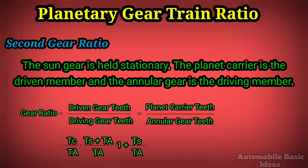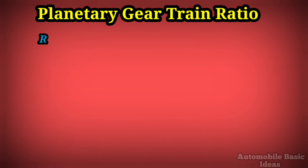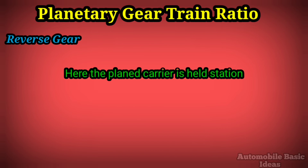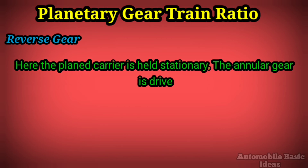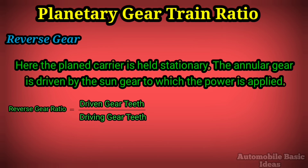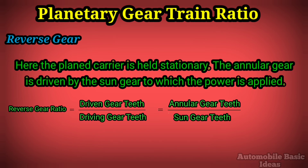Reverse gear: here the planet carrier is held stationary and the annular gear is driven by the sun gear, to which the power is applied. Reverse gear ratio = driven gear teeth ÷ driving gear teeth = annular gear teeth ÷ sun gear teeth = Ta ÷ Ts.